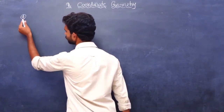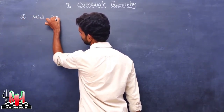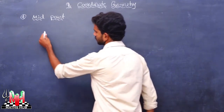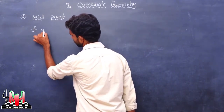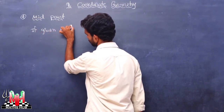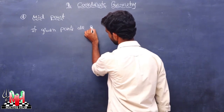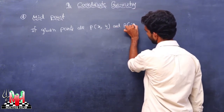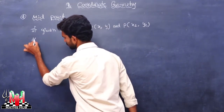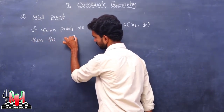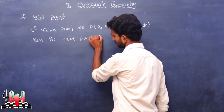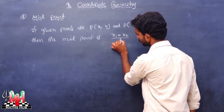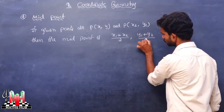Our second formula is the midpoint formula. If the given points are P of x1 comma y1 and P of x2 comma y2, then the midpoint is x1 plus x2 by 2 comma y1 plus y2 by 2.